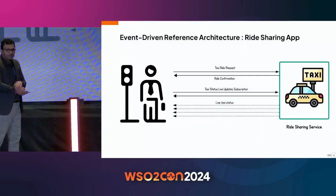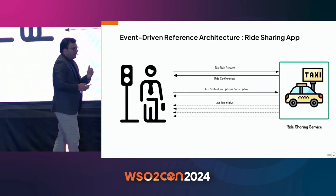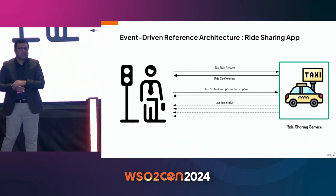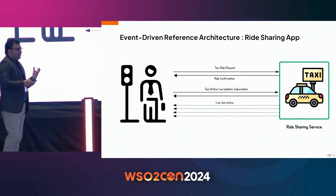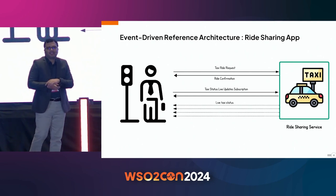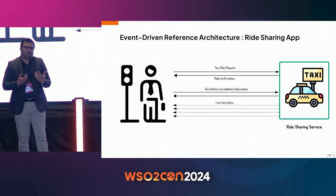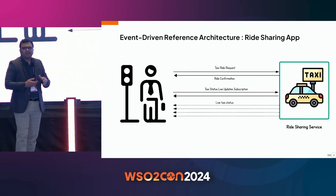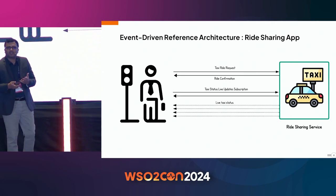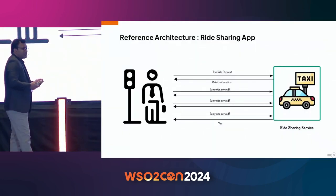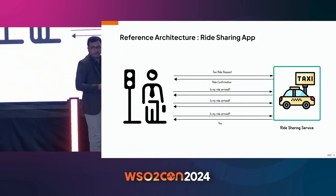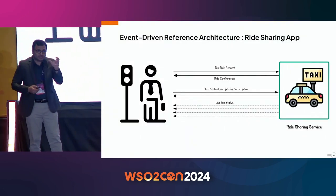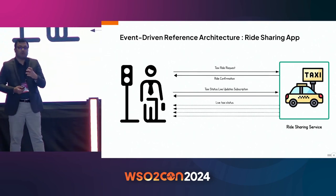Let's take another example — booking a ride using Uber or Lyft. Once you make a ride request and the ride is confirmed, you want frequent live updates about the status of the taxi. You subscribe for updates and receive them continuously. Event-driven is a more natural approach here. If you tried to implement the same thing with a request-driven manner, you would have to send a request every time to get an update. In industry, there are use cases where event-driven design makes sense, and this is one of them.